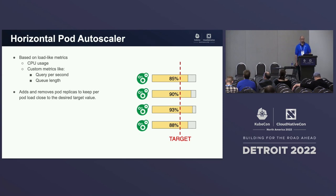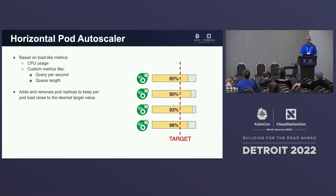HPA takes the value of this metric, compares it with the user-defined target, and depending on this comparison, adds or removes replicas hoping to move the metric towards the desired value.